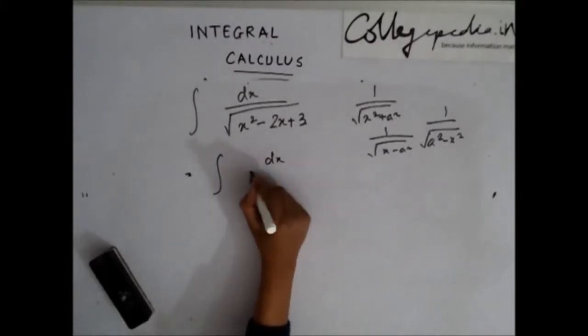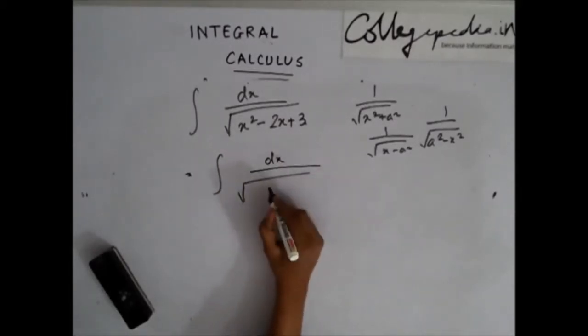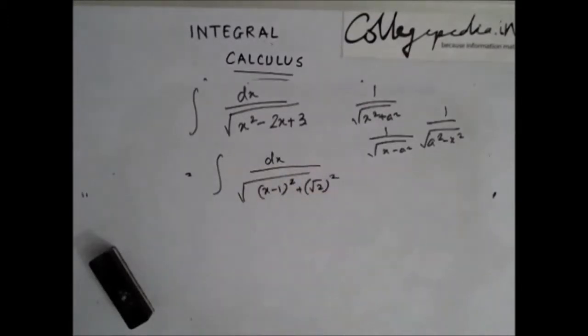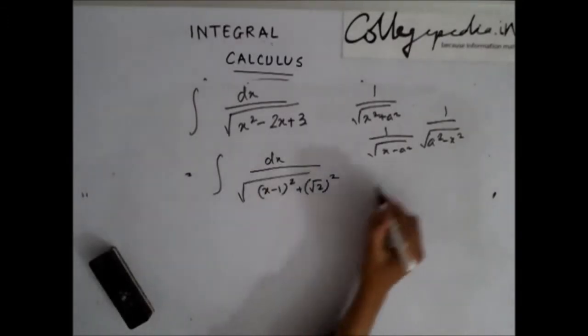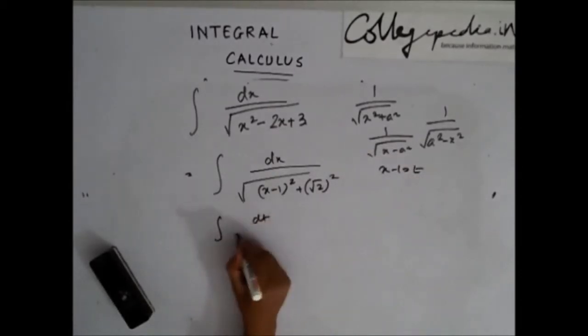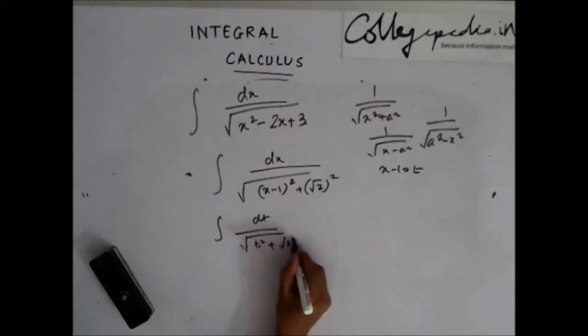I can write this as x minus 1 whole square plus this. And now if you take x minus 1 as t, you will get integration of dt by root t square plus root 2 whole square.